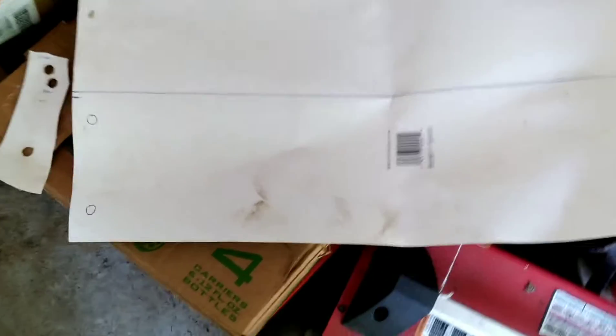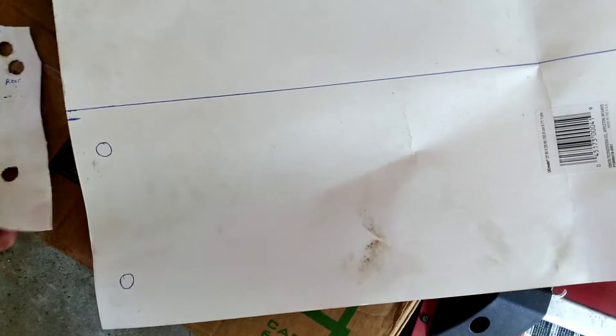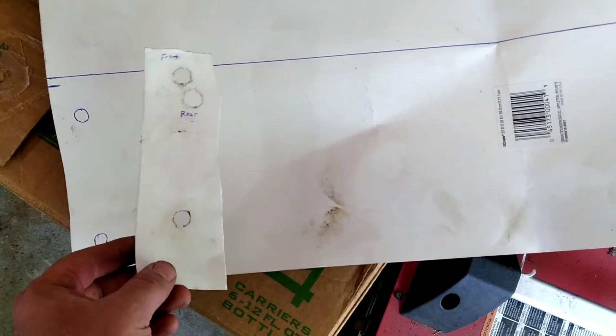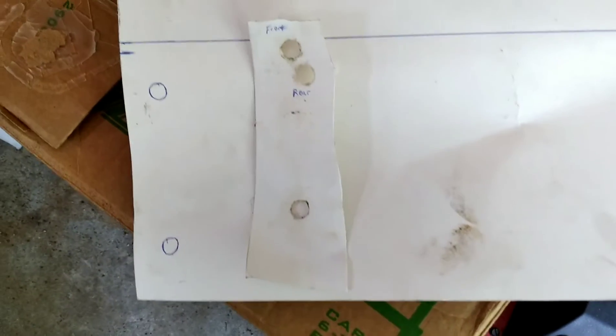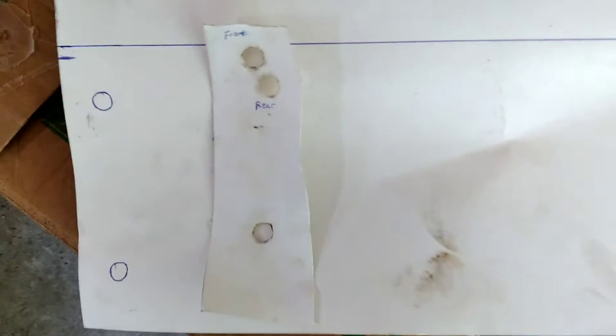All right, so what I got here is some poster board. I'm going to start making a template before I start cutting some steel. I started this little piece here, used a ball peen hammer, and I hammered on top of the holes.